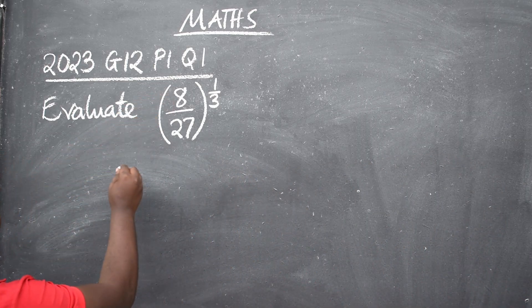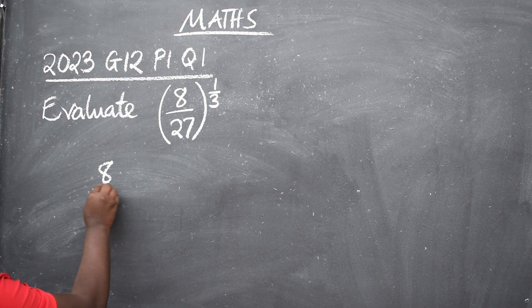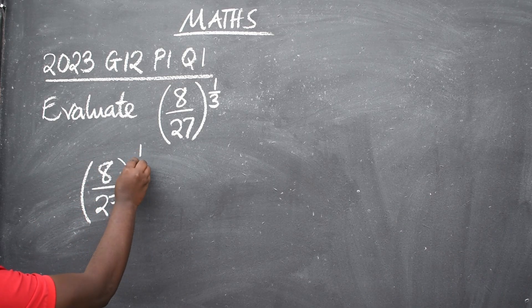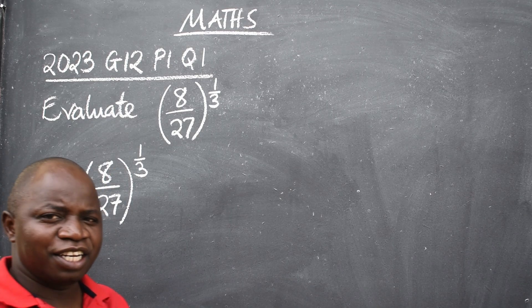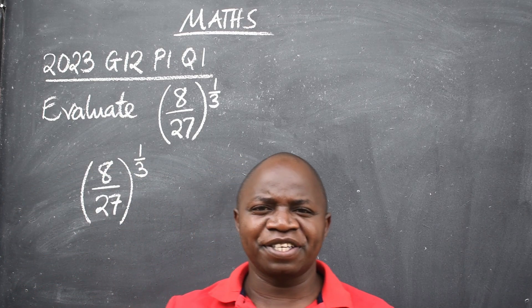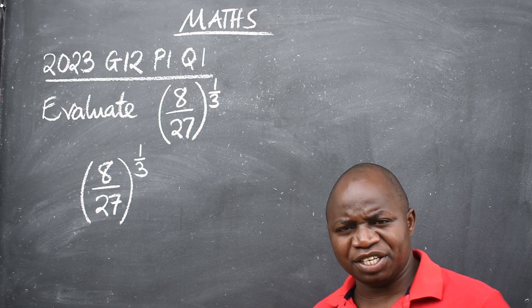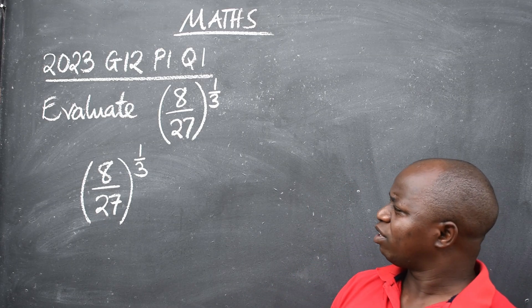Well you copy the question: 8 over 27 raised to the power 1 over 3. Identify the topic. Which topic is this? These are indices or index notation you can call it in that way.